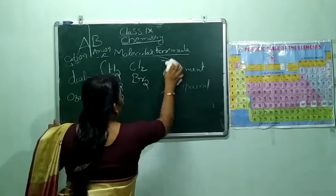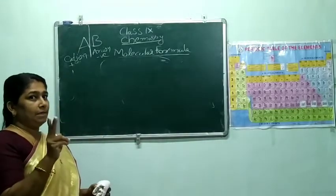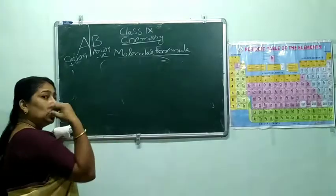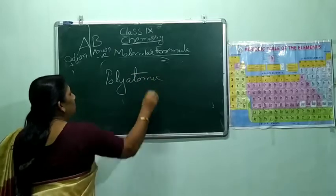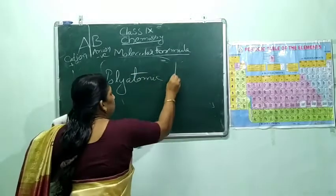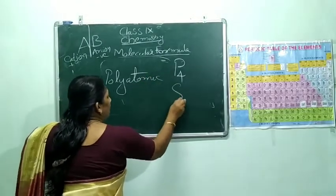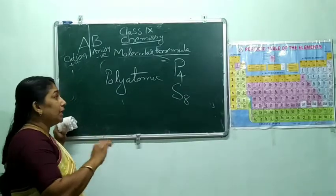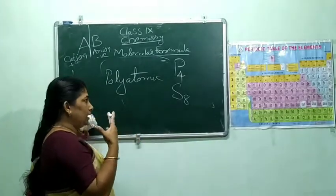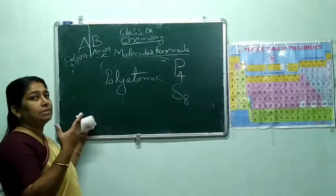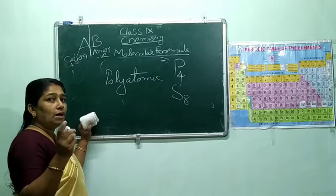Monoatomic — only one atom. Diatomic — two atoms. Triatomic — three atoms. More than three — that is called polyatomic. For example, phosphorus P4: four phosphorus atoms combine together to give a phosphorus molecule. Sulfur S8: eight sulfur atoms combine together, and the structure of sulfur is a crown-like structure. Different allotropes are there for sulfur — alpha-sulfur, beta-sulfur. Phosphorus also: red phosphorus and white phosphorus.